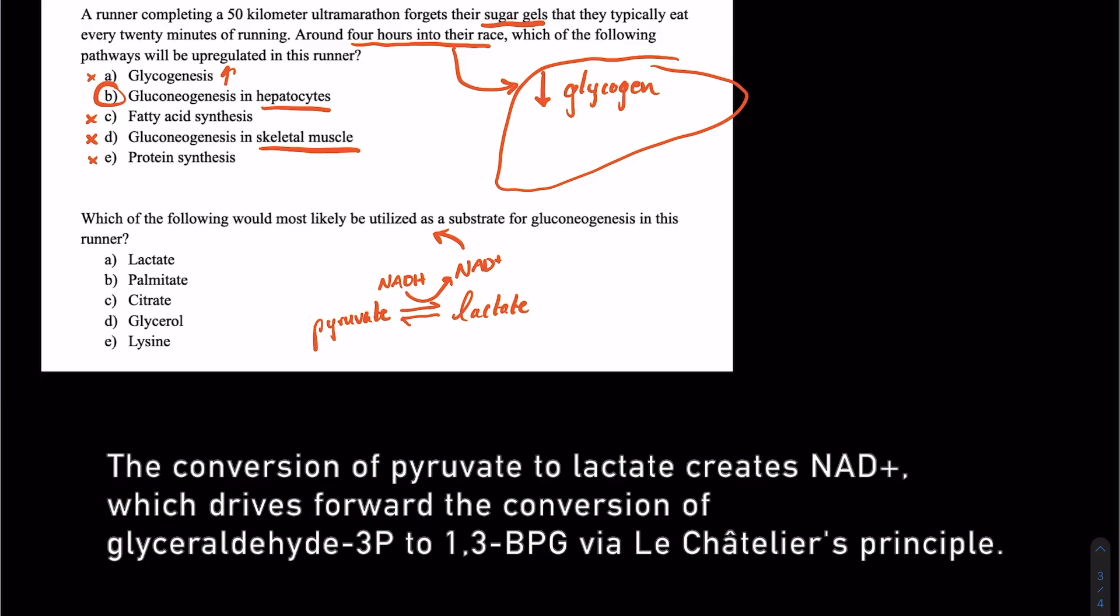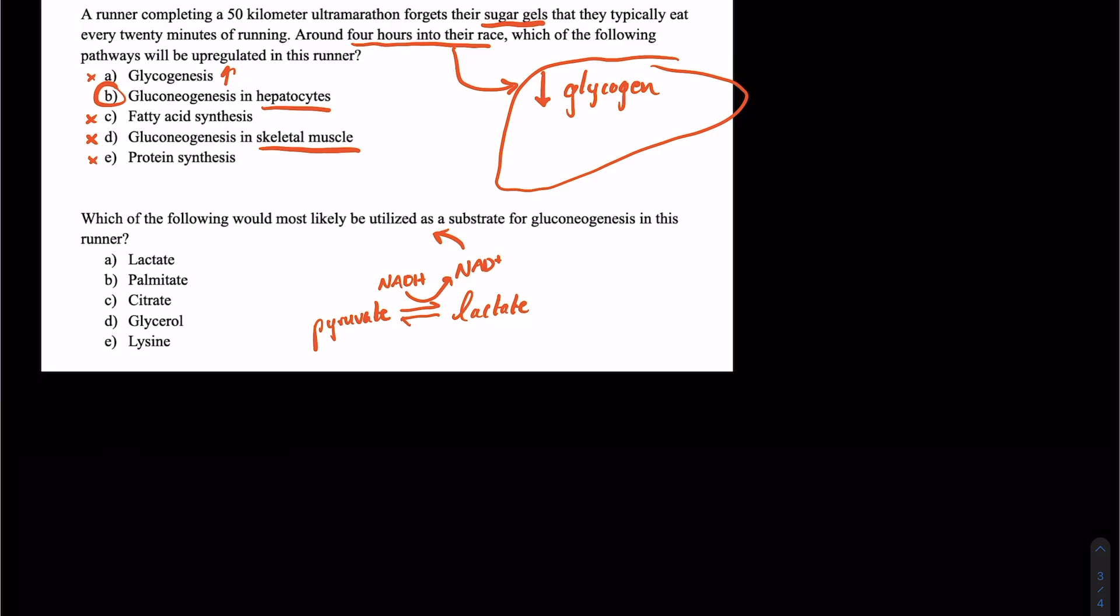And if this isn't making sense, that's all right. But basically, we just want to think about a lactic acidosis in a runner who's expending a lot of energy. So lactate is really going to be our best answer.